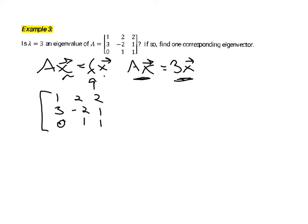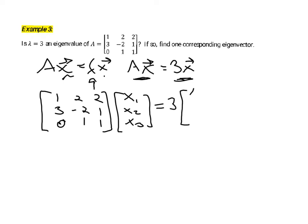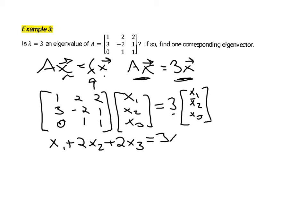We take matrix A — being careful to copy it correctly, since that's often where errors occur — and multiply by an unknown vector x with entries x1, x2, x3. We want this to equal three times x, so three times x1, x2, x3. Multiplying across the first row gives us x1 plus two times x2 plus two times x3 equals three x1 on the right-hand side.